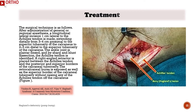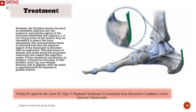A right-angled retractor is placed between the Achilles tendon and the posterior and superior borders of the calcaneal tuberosity. The retro-calcaneal bursa is exposed as well as the superior border of the calcaneal tuberosity without raising any of the Achilles tendon. However, the Achilles tendon has such an extensive insertion into the posterior and plantar aspect of the calcaneal tuberosity that raising a 1 to 2 cm long portion of the tendon may be necessary to resect the bone adequately. The retro-calcaneal bursa is removed first, then the superior aspect of the tuberosity is removed with an osteotome. The placement of several drill holes along the proposed osteotomy site makes this resection easier. If intratendineal calcification is present, it should be removed.